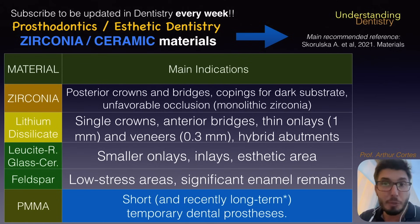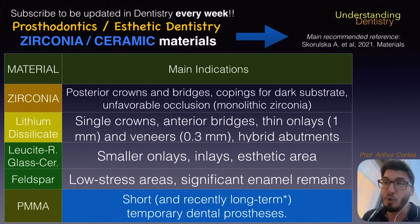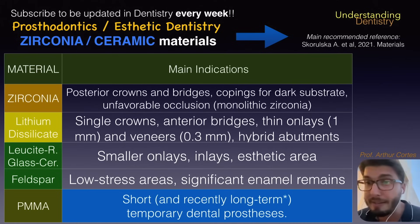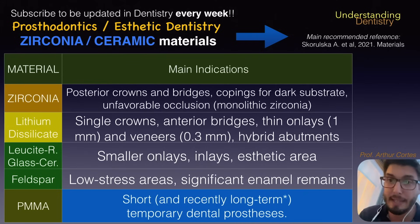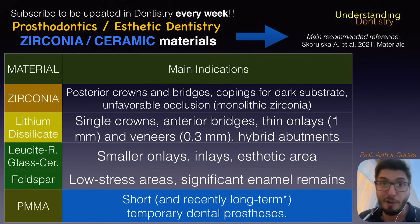Feldspar is indicated for low stress areas and teeth with significant remaining enamel — you should consider carefully the characteristics of your remaining tooth in the treatment plan. PMMA is for short-term use, and recently we have modified PMMA for long-term restorations, such as Prime from Zirconzan, which can be very interesting as long-term solutions for patients.